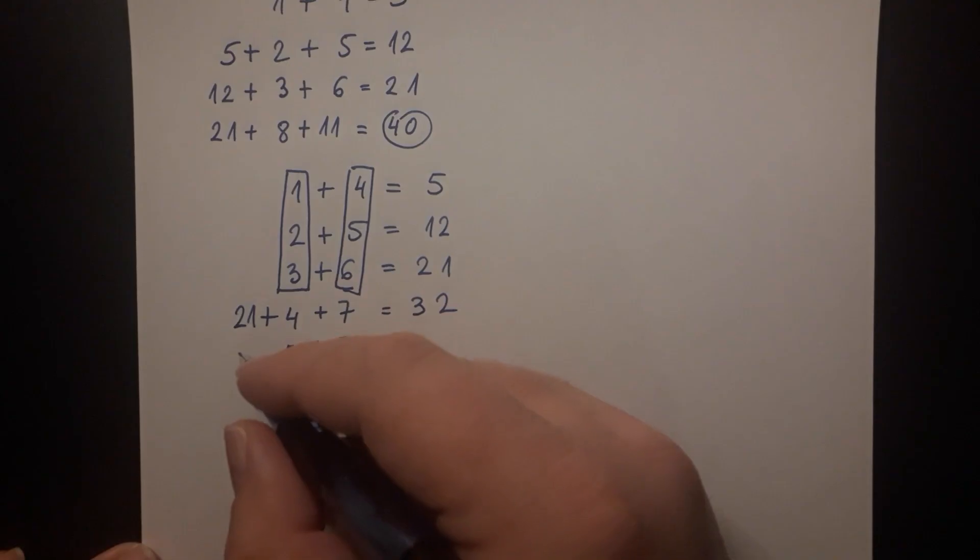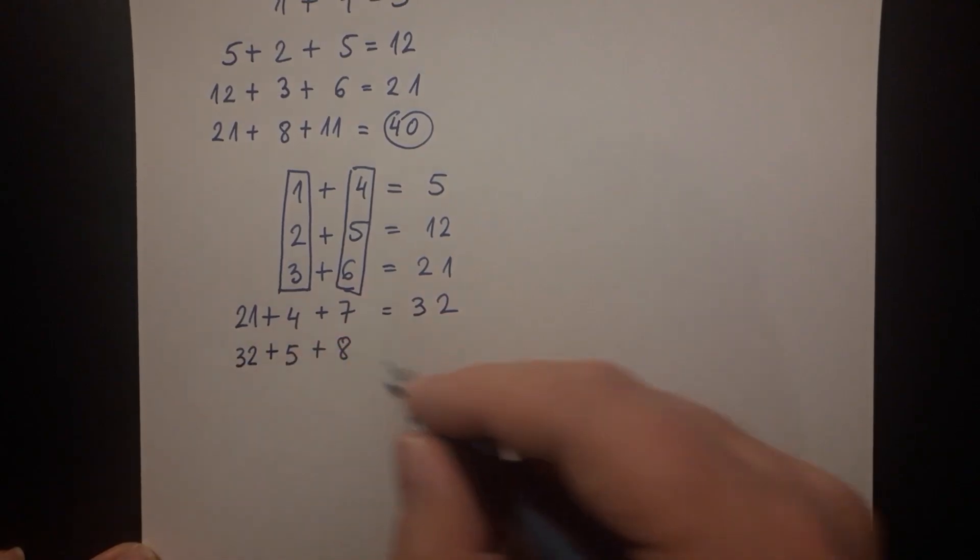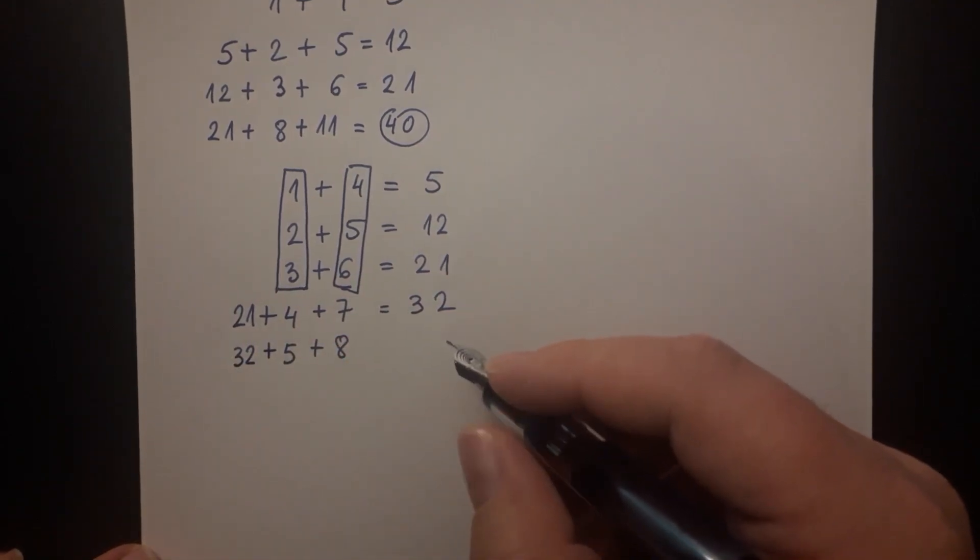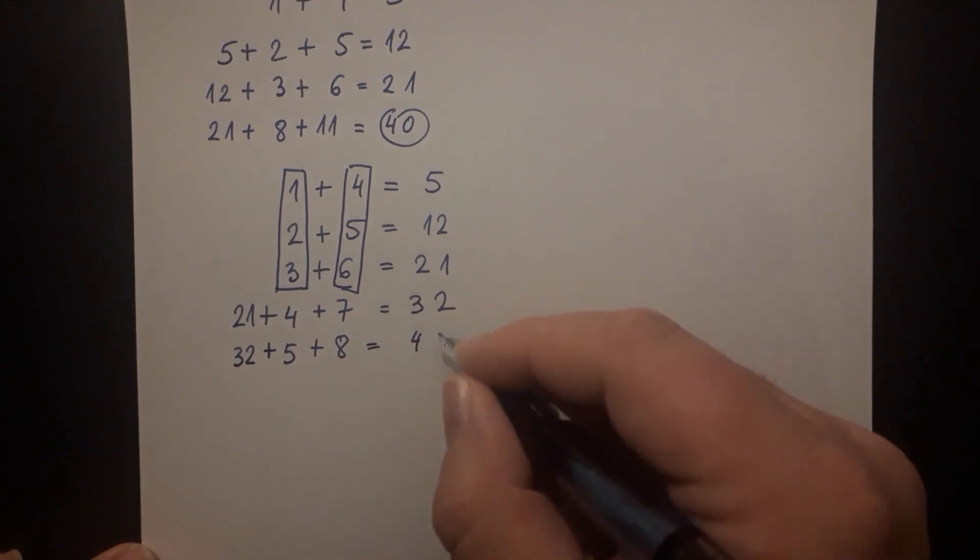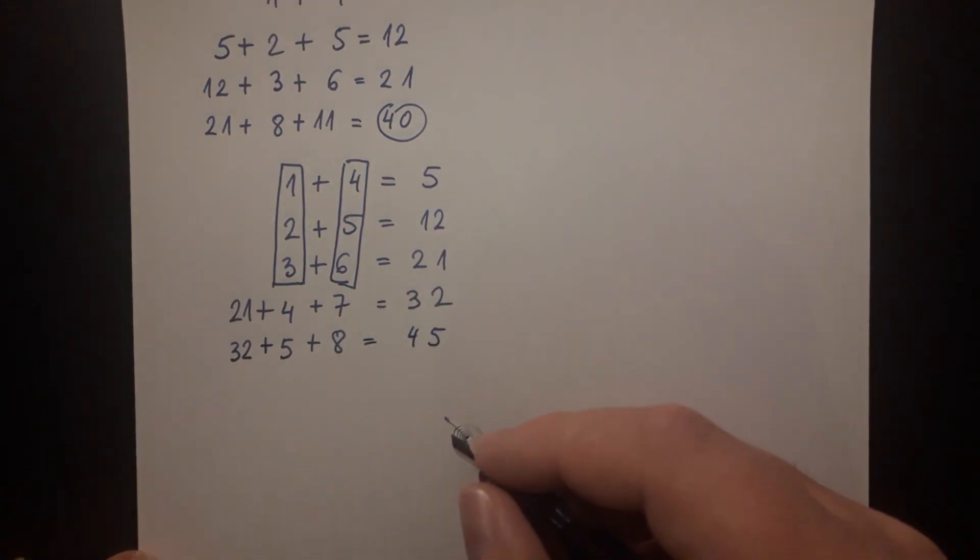The previous answer of 32 is then added to the 5 plus 8 and then we get 45. Let's continue the pattern.